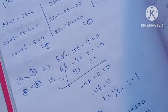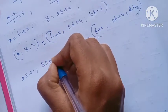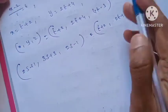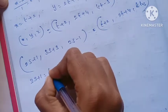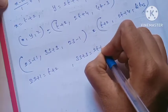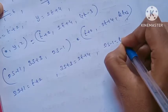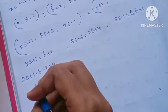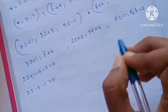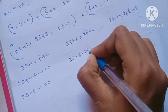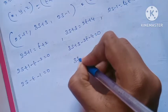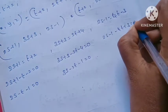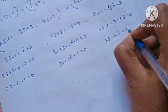Setting the two parametric forms equal: 2s + 1 = t + 2, 3s + 3 = 2t + 4, and 2s minus 1 = 4t minus 3. Rearranging: 2s minus t minus 1 = 0 (equation 1), 3s minus 2t minus 1 = 0 (equation 2), 2s minus 4t + 2 = 0 (equation 3).